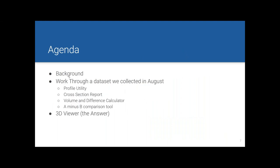I'll give you a little background about where we are in the world, why we collected this data set, and what I was trying to do — then walk you through what I did to understand what we had collected and whether our equipment was working properly. Over the course of this talk, I'll cover our profiling utility for exporting profiles wherever you draw a mouse, a cross-section report utility for doing cross-sections at regular intervals, and the volume and difference calculator.